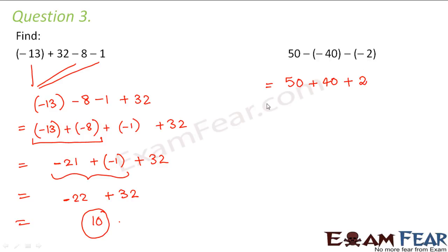So you have all positive integers which need to be added. So 50 plus 40 would be 90. 90 plus 2 would be 92. So 92 would be the answer.